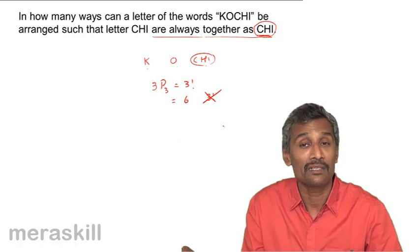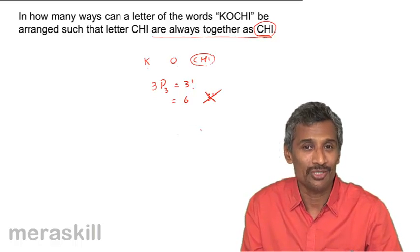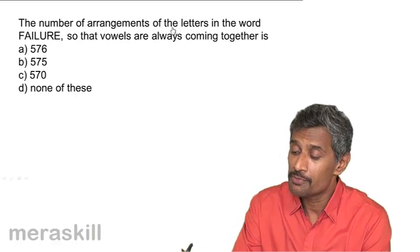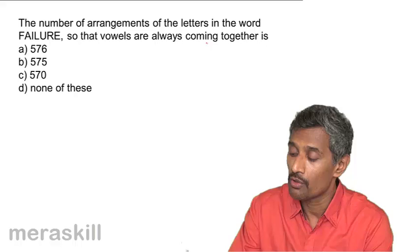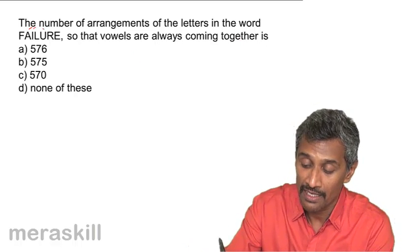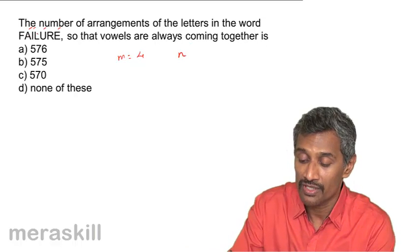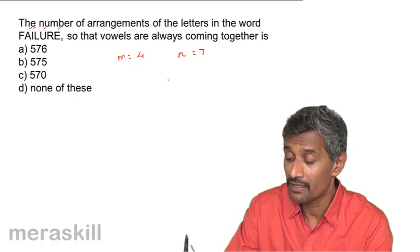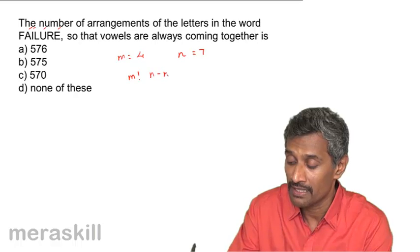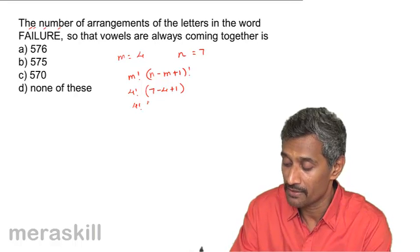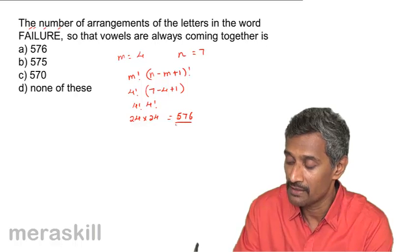This example is given in an ingenious way to show the difference between the two situations. Furthermore, we have: find the number of arrangements of the letters in the word FAILURE such that the vowels are always together. The vowels are A, I, U, E — so there are four vowels, meaning m equals four. The total letters n is seven. Using the formula: m factorial into n minus m plus one factorial equals four factorial into seven minus four plus one factorial, which is four factorial into four factorial. Four factorial is 24, so 24 into 24 gives 576.